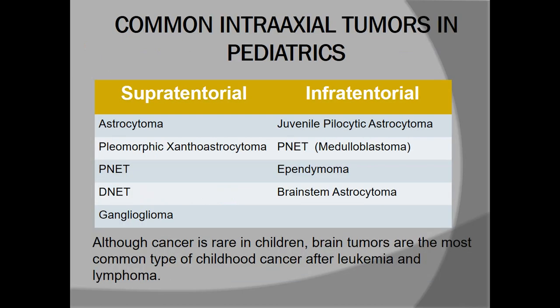Talking about pediatric brain tumors: metastases are very uncommon in the pediatric population. The commonest supratentorial tumors are astrocytoma, DNET tumors, and gangliogliomas. In the infratentorial parts, we can have pilocytic astrocytoma, medulloblastoma, ependymoma, and brainstem astrocytoma.